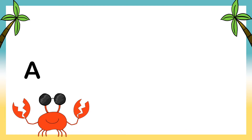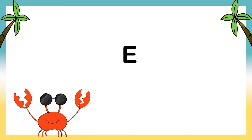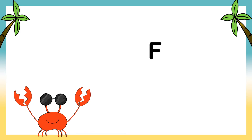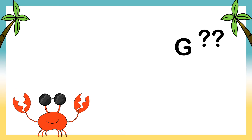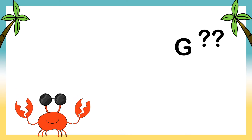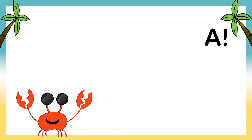OK, so we all know there's seven letters in the musical alphabet. Let's say them together now: A, B, C, D, E, F, G. What note comes after G in the musical alphabet? That's right! It goes back to A.